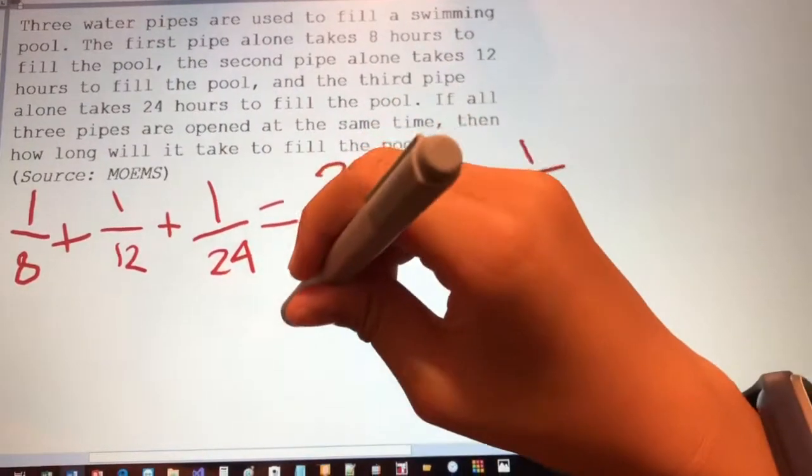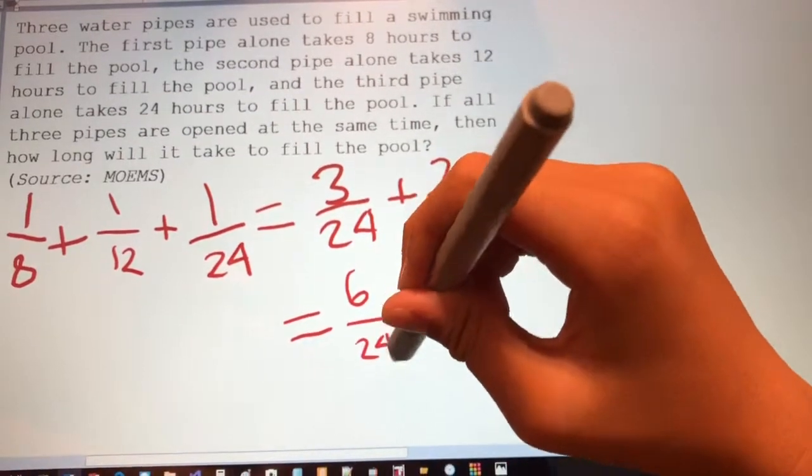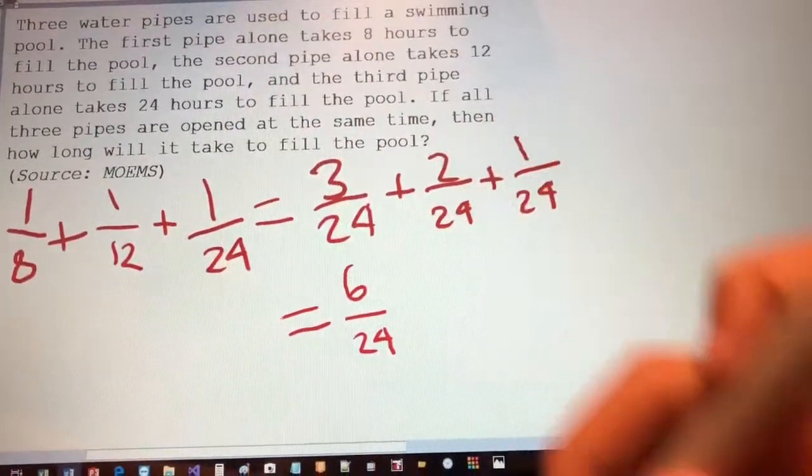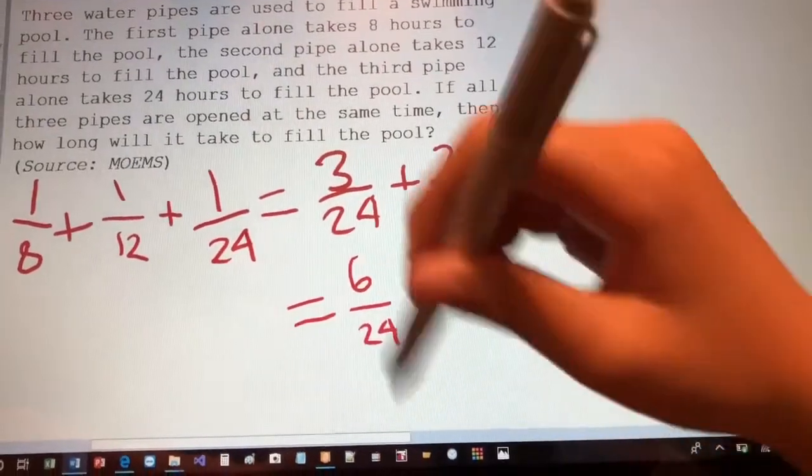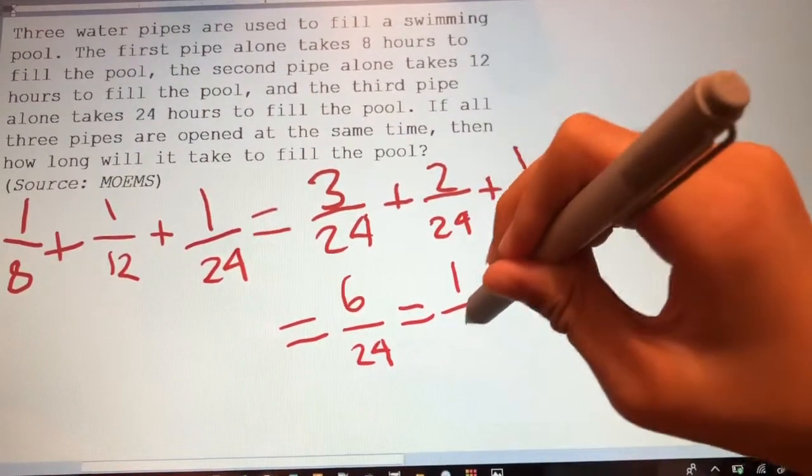And then add this all up, that'd be 6/24ths. And then we can simplify this here, we can take out a common factor of 6. And that would be 1/4th.